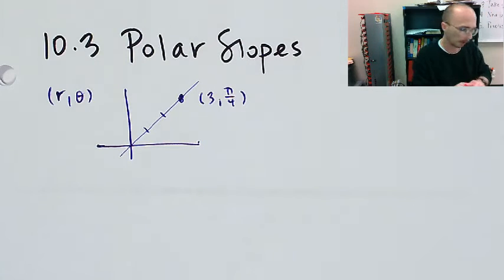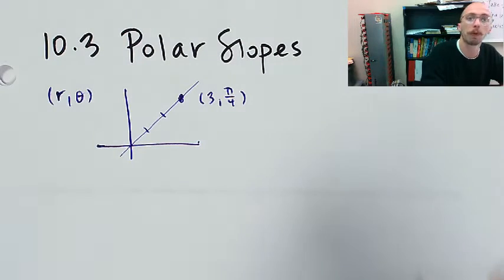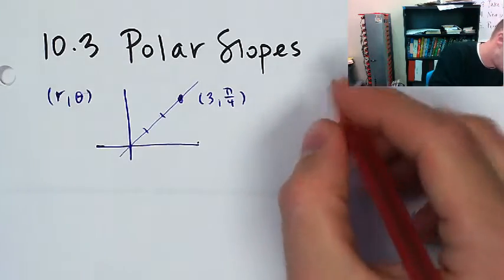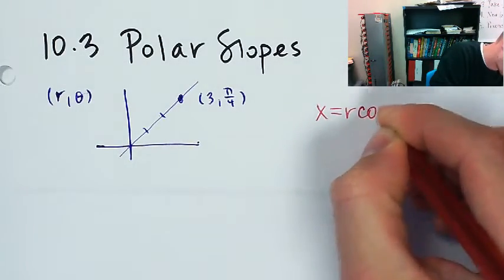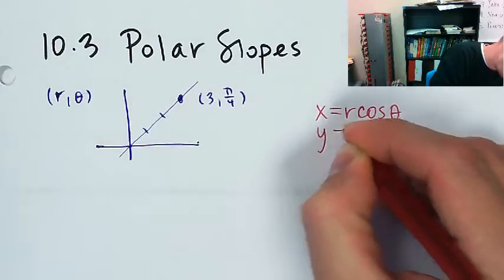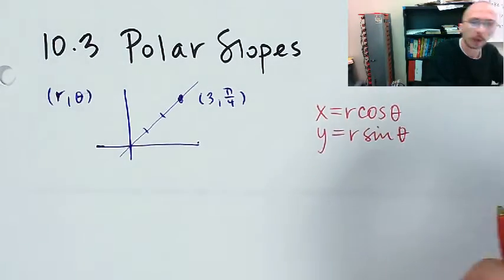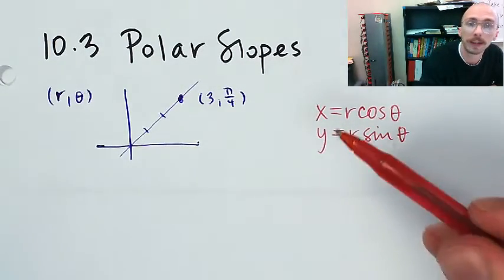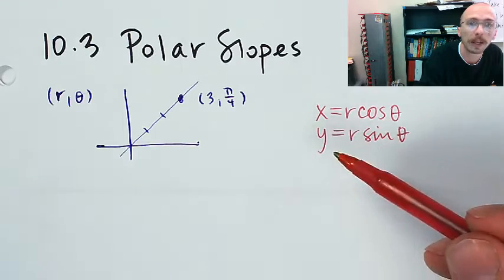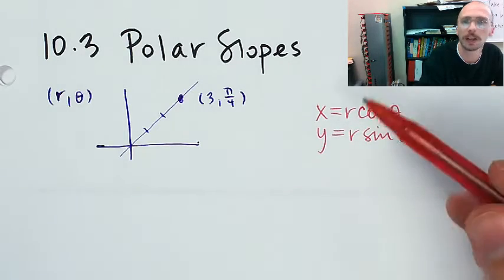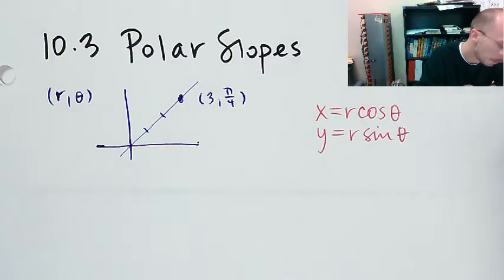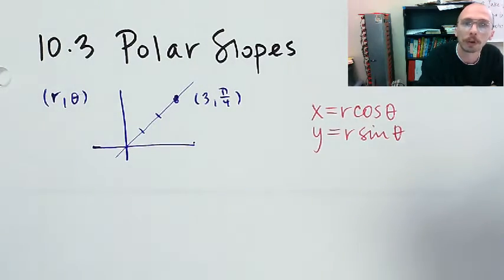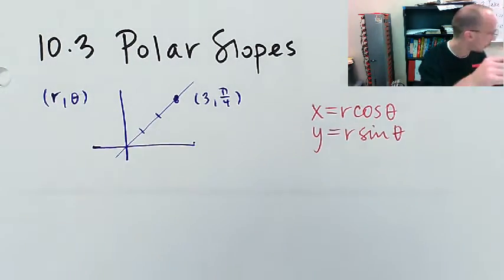The important formulas that we needed to know, and these are really important, that x is equal to r times cosine theta and y is equal to r times sine theta. We do have formulas for theta and r in terms of x and y, but they don't come up nearly as often. And I'm going to say, in terms of what you must know for this unit exam, I'd say x equals r cosine theta and y equals r sine theta. Those are the big formulas.